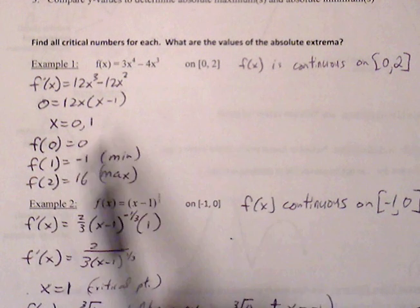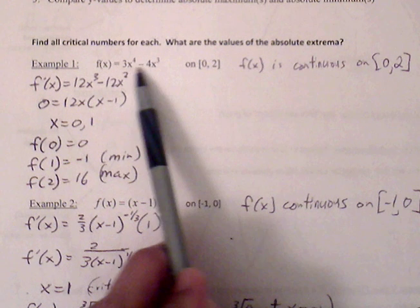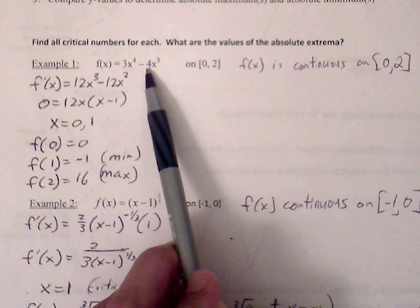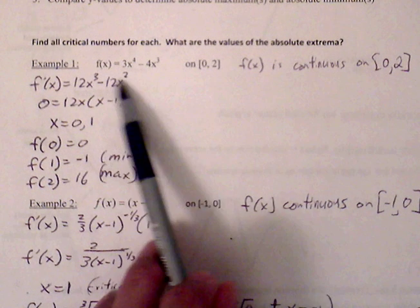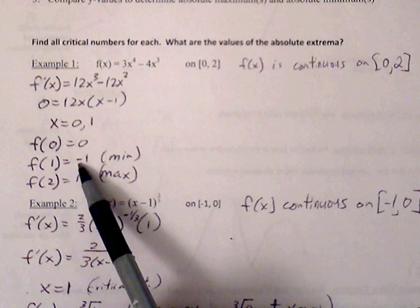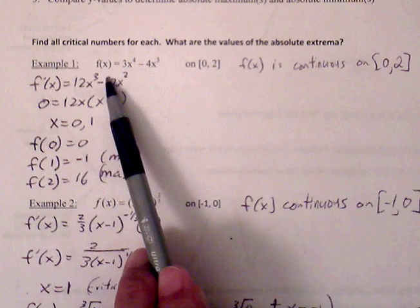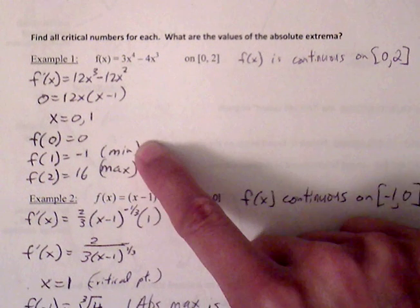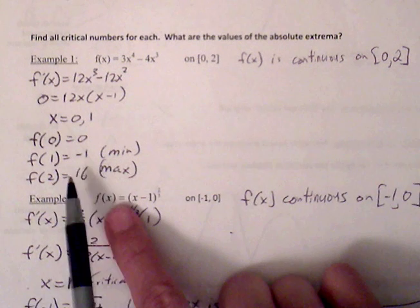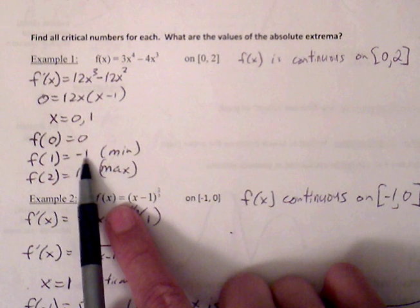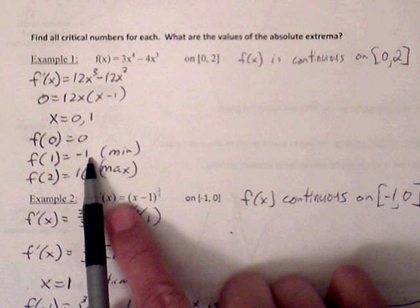We plug 0, 1, and 2 back into the original function to find the y-values. Plugging in 0 gives 0. Plugging in 1 gives negative 1. Plugging in 2 gives 16. Comparing these three y-values, the largest is 16 and the lowest is negative 1. So the absolute max is 16 and the absolute min is negative 1.